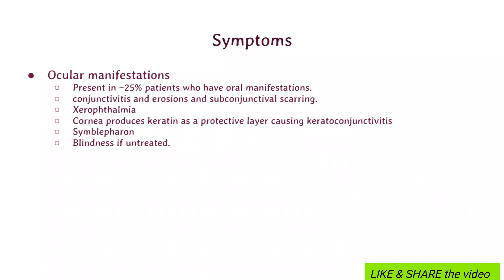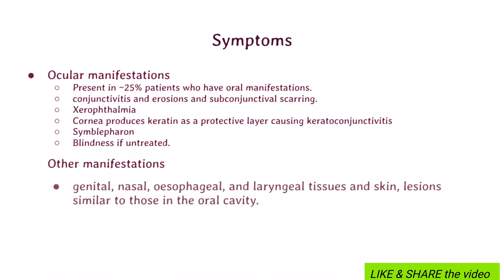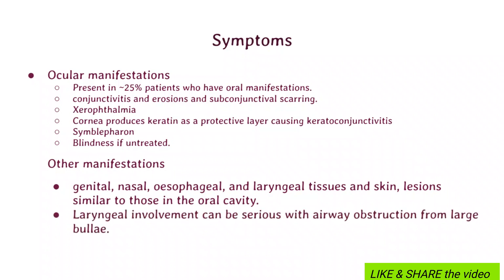Other manifestations relate to all mucous membranes — genital, nasal, esophageal, and pharyngeal tissues. Skin lesions similar to those of the oral cavity may be seen in any of the mucous membranes. Importantly, laryngeal involvement can be serious with airway obstruction from large bullae, and if the larynx is involved it requires immediate treatment.